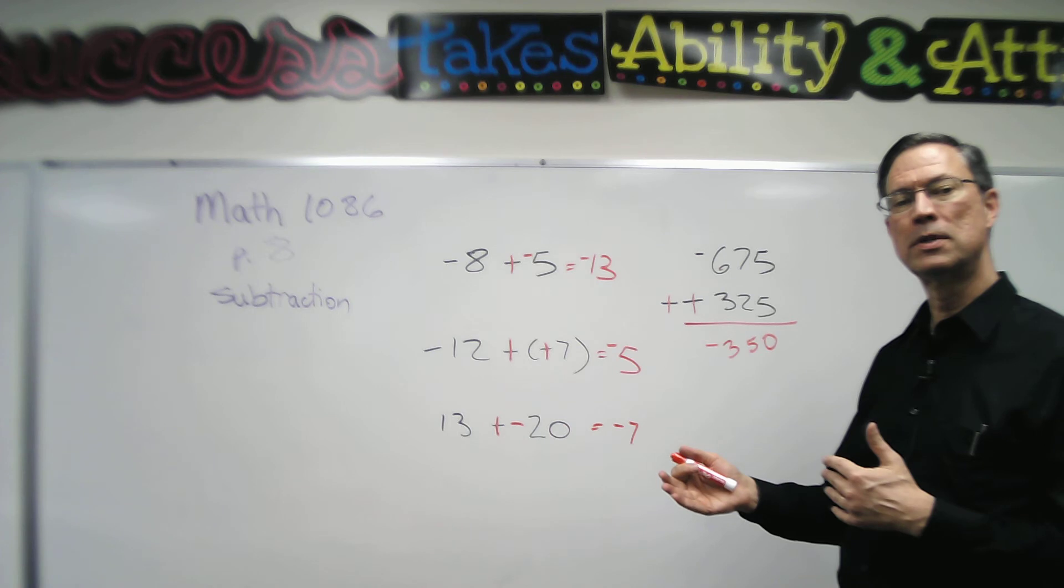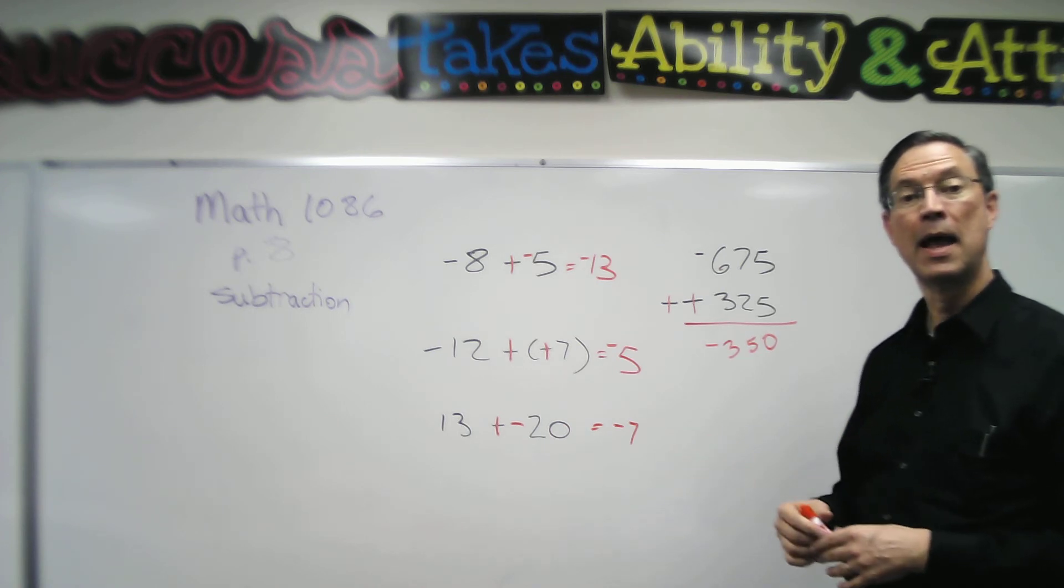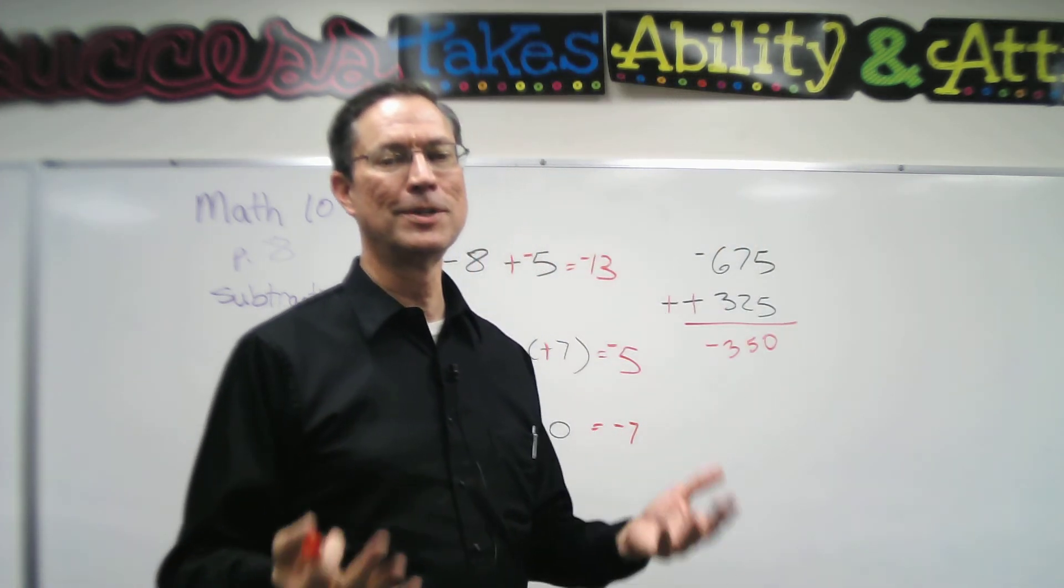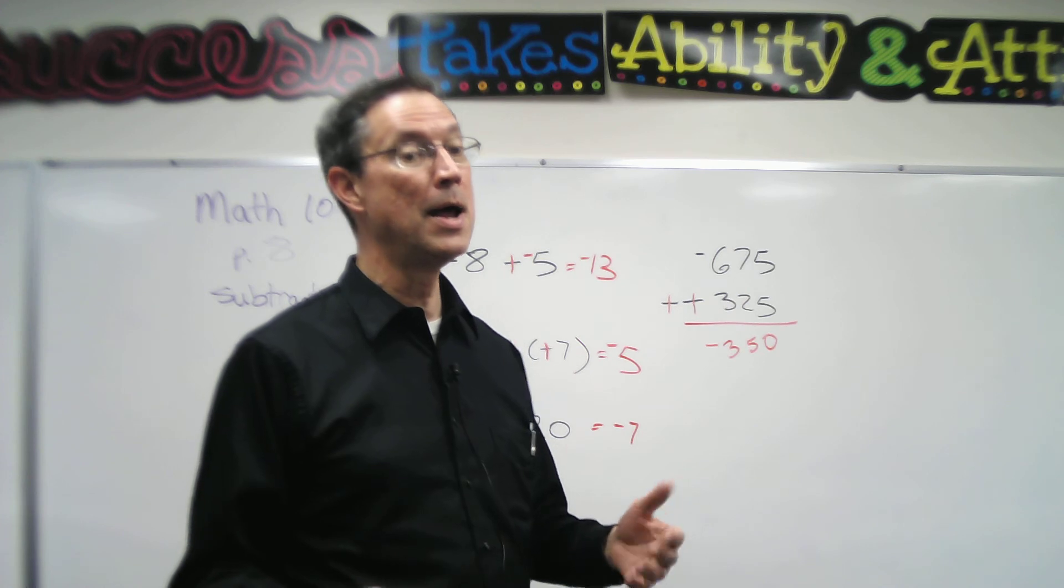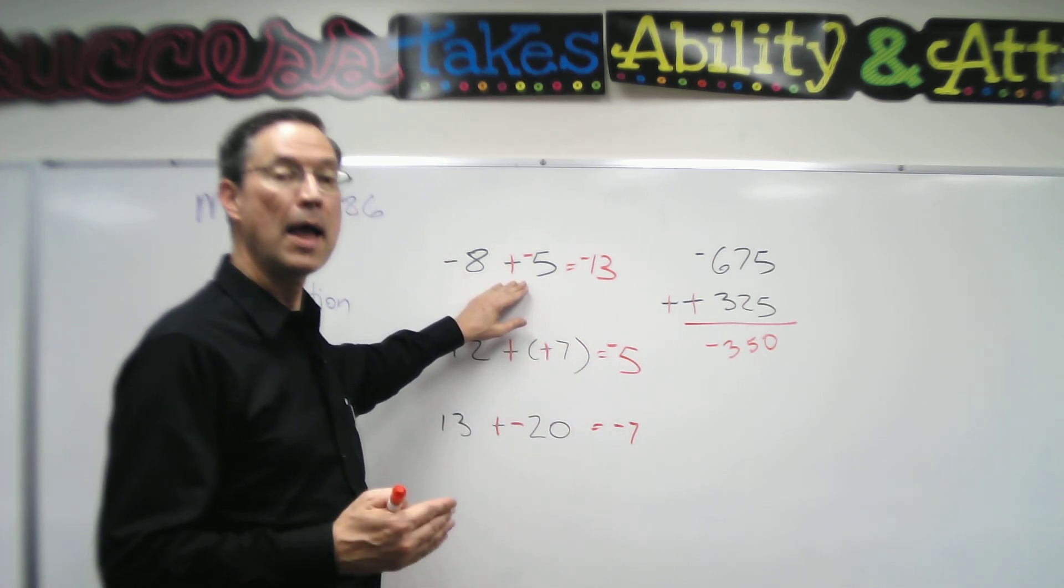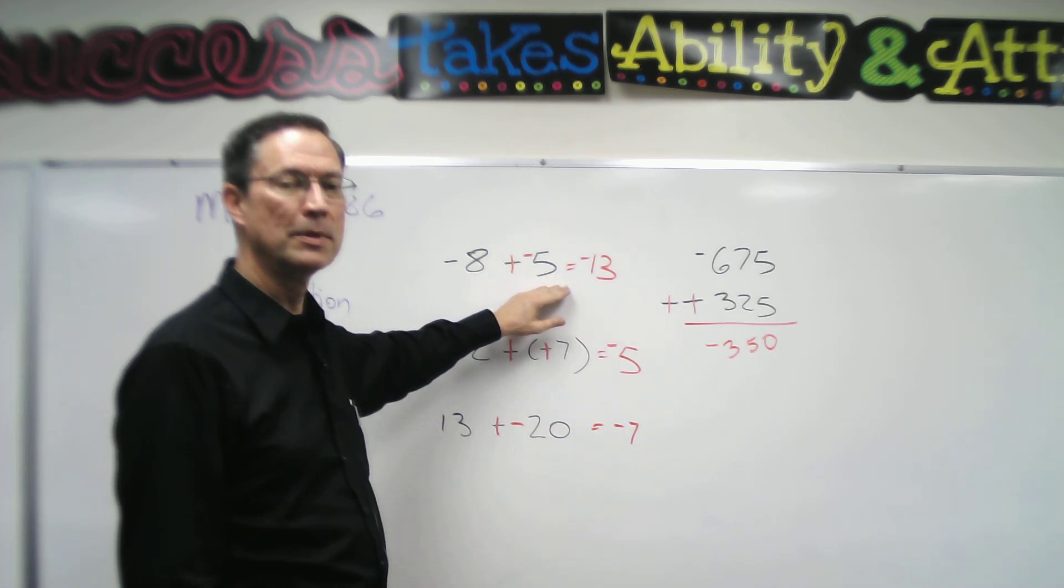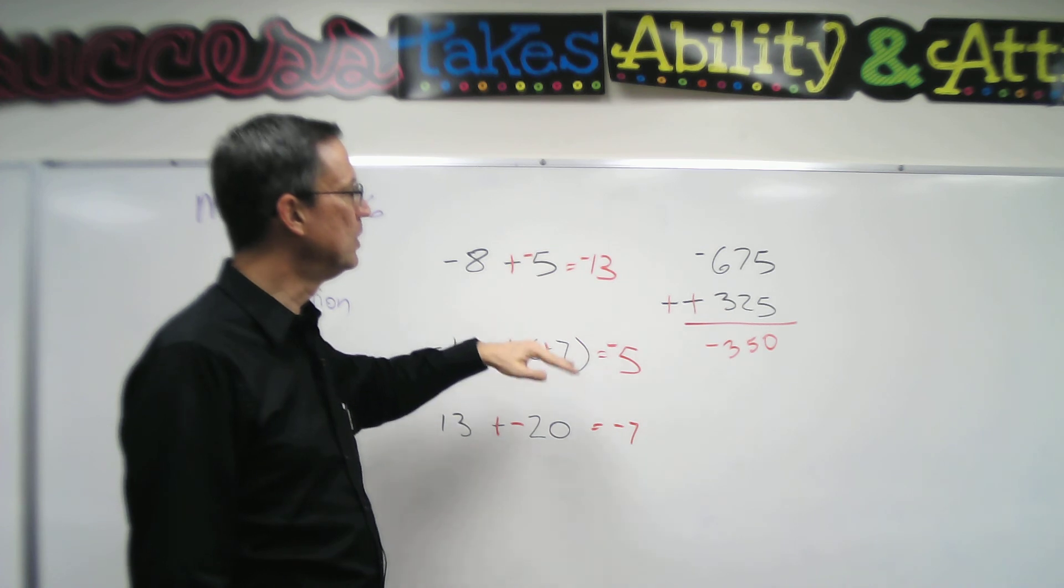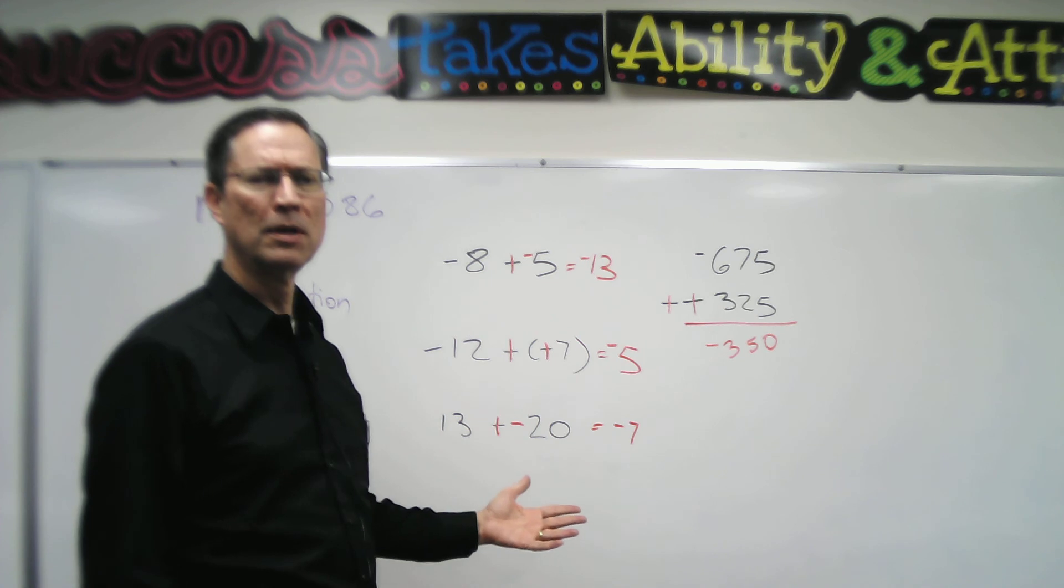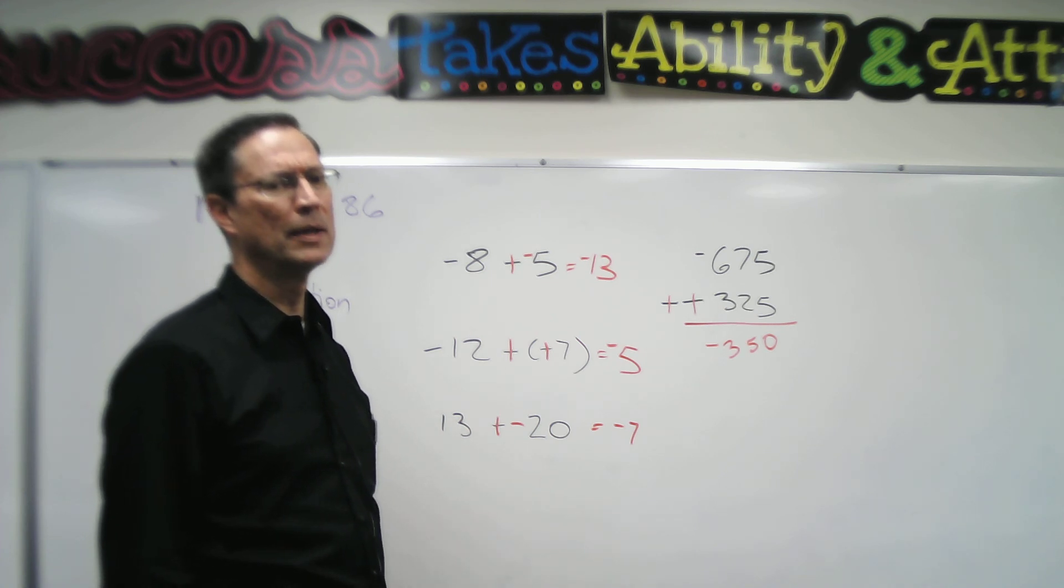So let's rehearse real quick. Adding when the signs are the same, add and keep the common sign. Adding when the signs are different, subtract the smaller from the larger, keep the sign of the larger, and change subtraction to addition, and don't forget the second part, and change the second number to its opposite. Okay, keep those three rules in mind for now and it'll be easy. I don't think I'm going to talk about the rule for multiplying and dividing. It is so easy. If you read it, you'll get it.